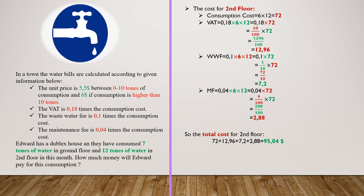So the total bill that Edward should pay is 50.82 plus 95.40 dollars, which is 145.86 dollars.